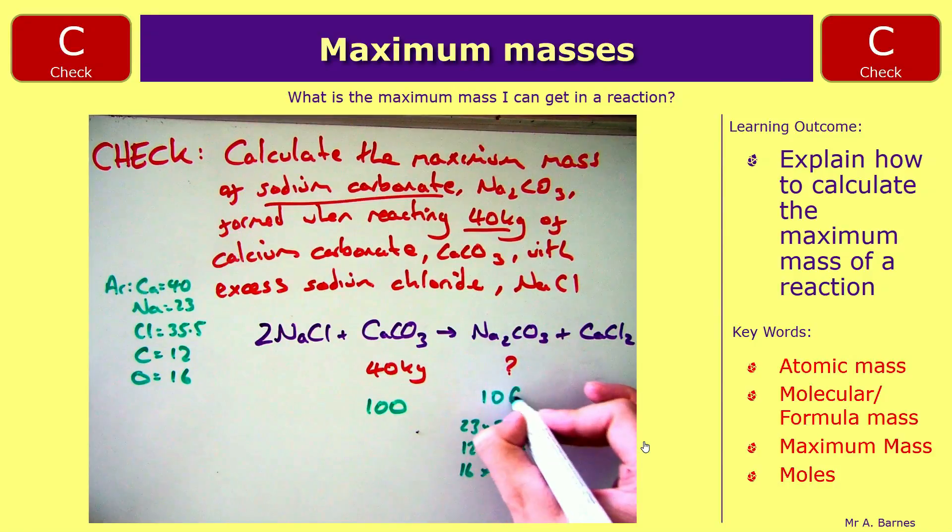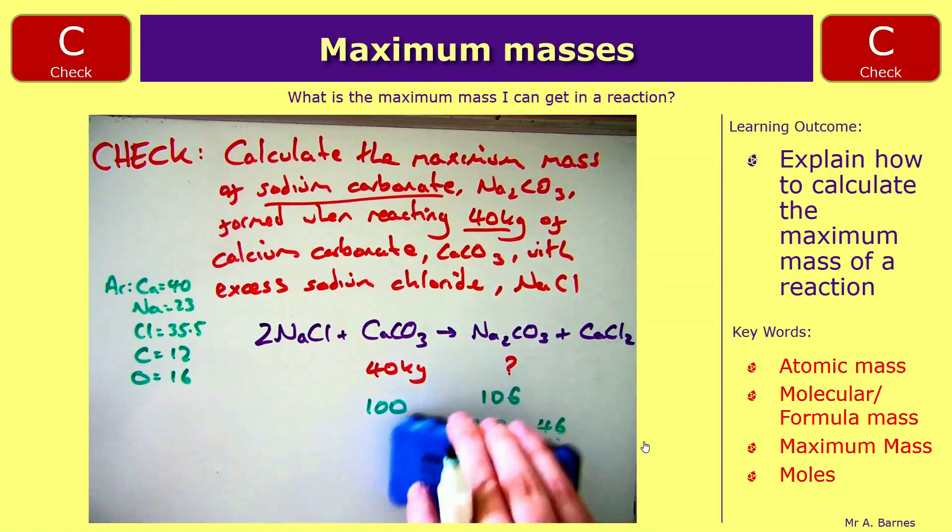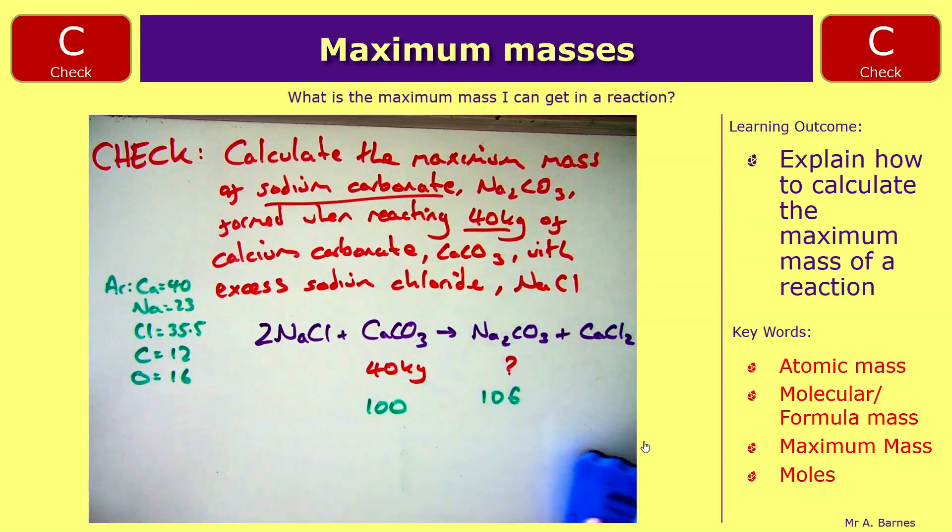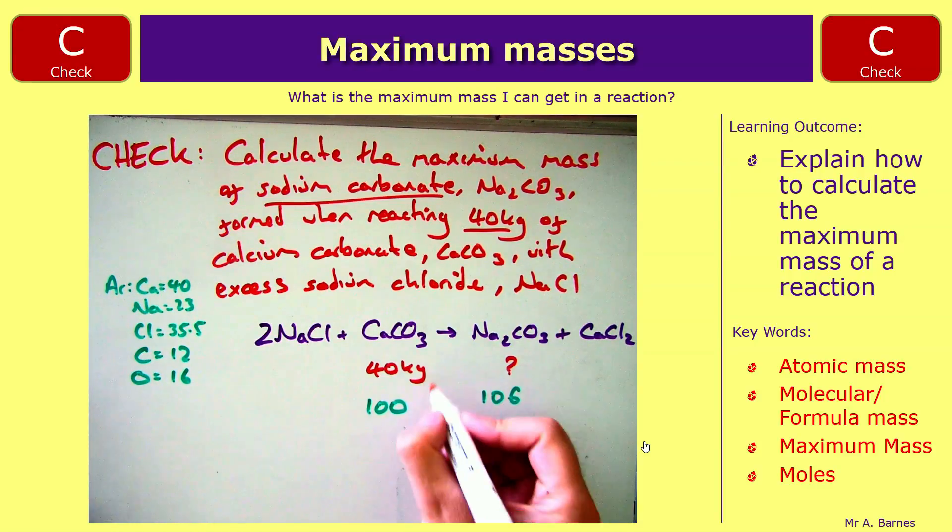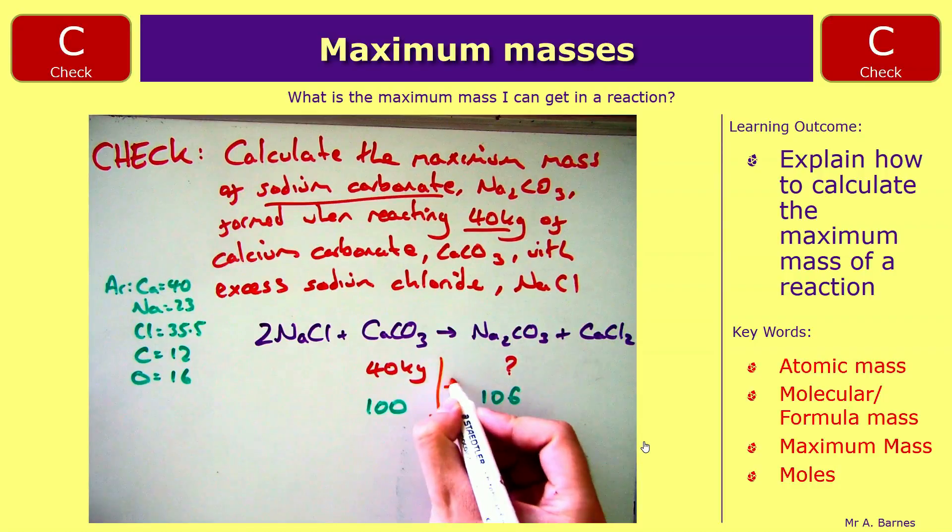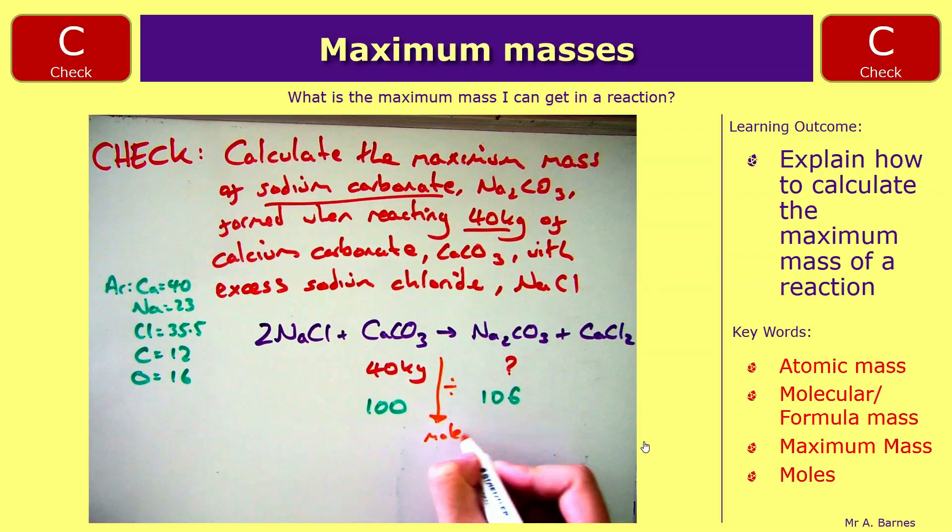So I've now got my mass and my MRs in. The next thing I need to do is work out my moles for calcium carbonate, which is 40 divided by 100. So dividing down, 40 divided by 100, which gives me 0.4.